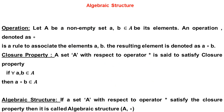First, we start with the definition of operation. Let A be a non-empty set; a and b are elements belonging to A. An operation, denoted as star (*), is a rule to associate the elements a and b, and the resulting element is denoted as a star b.